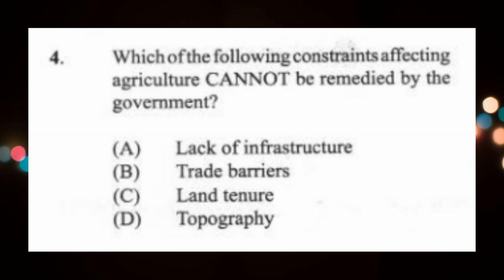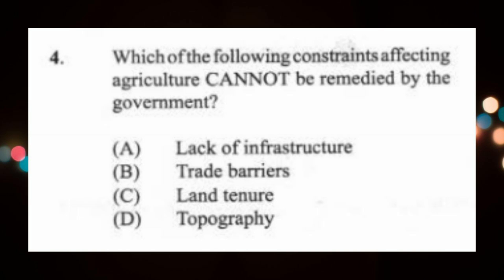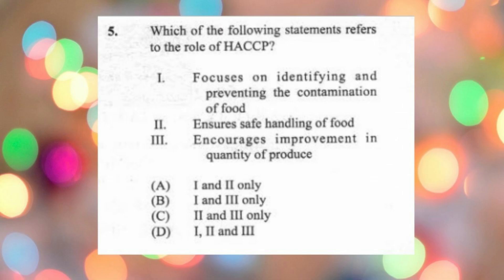Question 4: Which of the following constraints affecting agriculture cannot be remedied by the government? (a) lack of infrastructure, (b) trade barriers, (c) land tenure, (d) topography. The answer is D, topography. Topography is the slope or shape of the land — whether it's hilly, flat, or slightly sloping. That is created by nature, and the government cannot do anything about it.